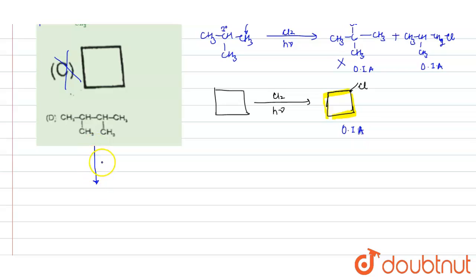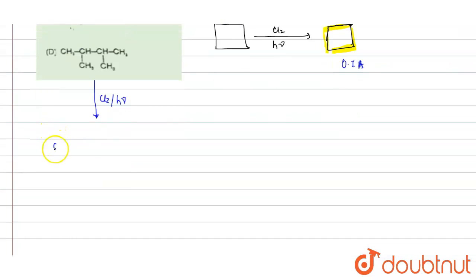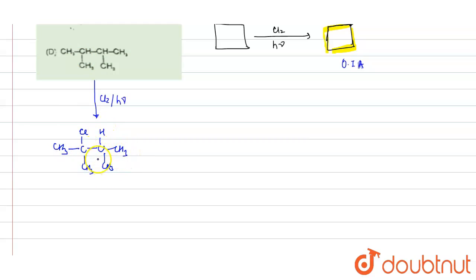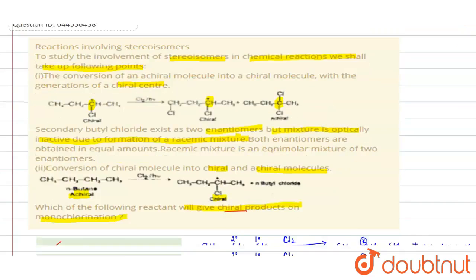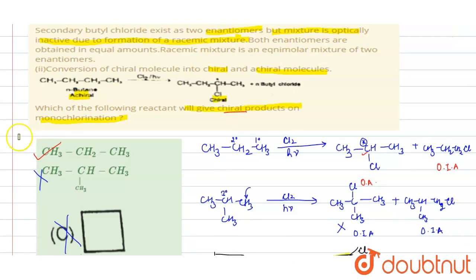The fourth compound, on monochlorination in the presence of light, gives products where attack on any carbon results in no chiral carbon being present. Therefore, this compound also does not give a chiral product. The answer is Option A — it is the only option that gives a chiral product on monochlorination.